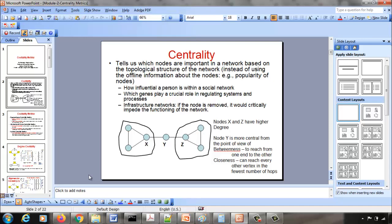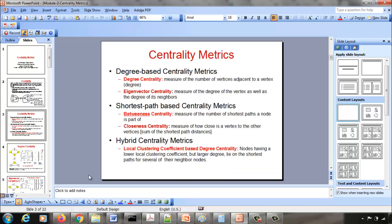So we are going to look at two broad categories and then a hybrid category that brings together the best of these two. The degree-based centrality metrics, in which you will see the degree centrality itself, is just a measure of the number of neighbors for a vertex. And then the eigenvector centrality metric, which is a measure of the degree of a vertex as well as the degree of its neighbors, so it again captures degree in one way or the other.